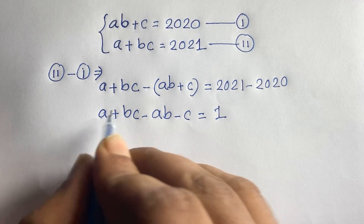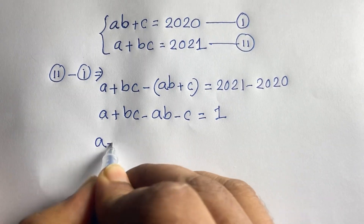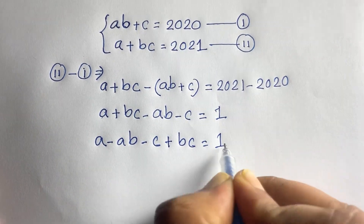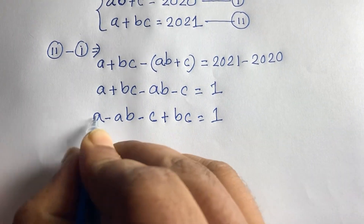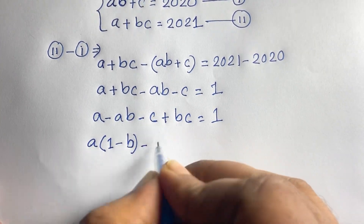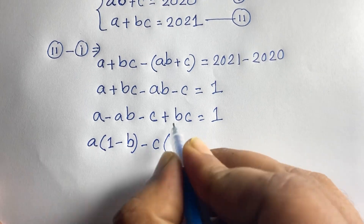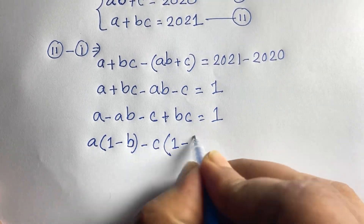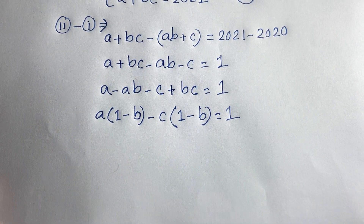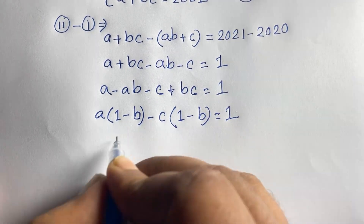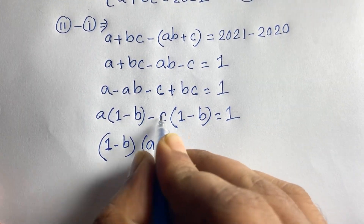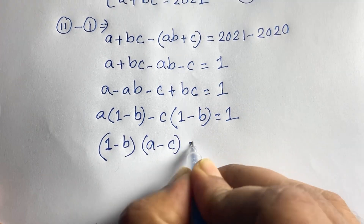Now I can see: a minus ab, that is minus c, plus bc equals 1. Here, a is common, so a(1 - b), and c is common, so minus c(1 - b) equals 1. This gives us (1 - b)(a - c) equals 1.